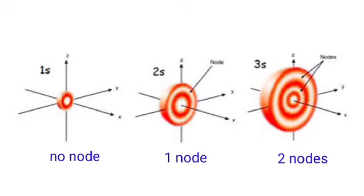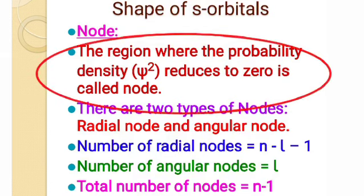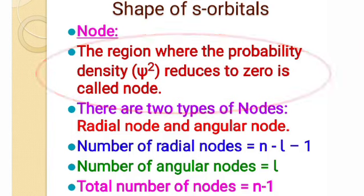In 3s-orbital, two nodes are present. There are two types of nodes: radial node and angular node. The radial node is the region where the probability density reduces to zero.